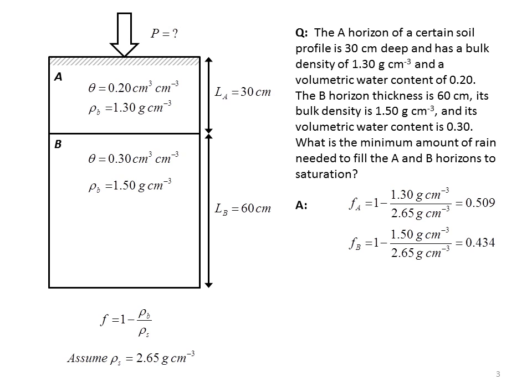Likewise, we can calculate the porosity of the B horizon. We have 1.50, the bulk density of the B horizon, divided by 2.65, the assumed particle density. In this case, we get a lower porosity, as we would expect, 0.434.